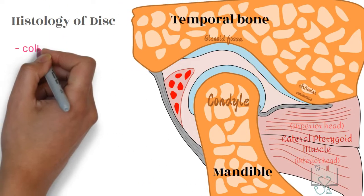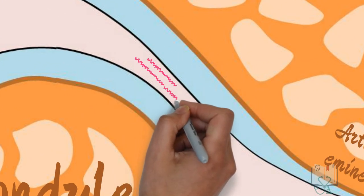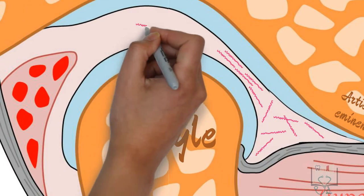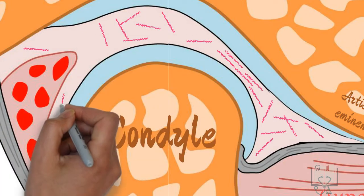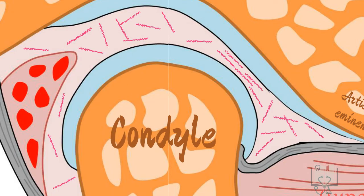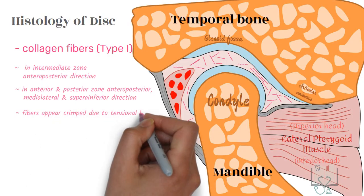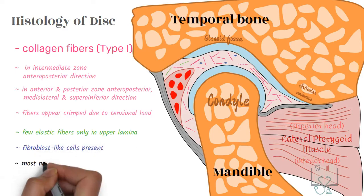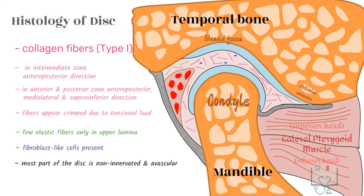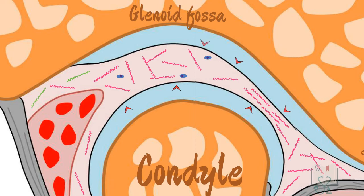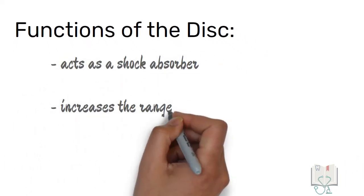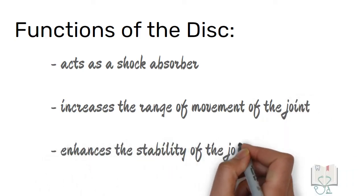Histologically, the disc is mainly made of type 1 collagen fibers, which in the thinner central region run mainly in the anteroposterior direction. In the thicker anterior and posterior zones, the fibers run anteroposteriorly, mediolaterally, and superoinferiorly, giving a much convoluted appearance. The collagen fibers show a wavy or crimped pattern due to tensional load. Few elastic fibers are also present, limited only to the upper lamina of the posterior zone. Few fibroblast-like cells are present. The bulk of the intra-articular disc is non-innervated and avascular, and derives its nutrition by diffusion from the synovial fluid. The disc acts as a shock absorber, increases the range of movements of the temporomandibular joint, and enhances the stability of the joint.